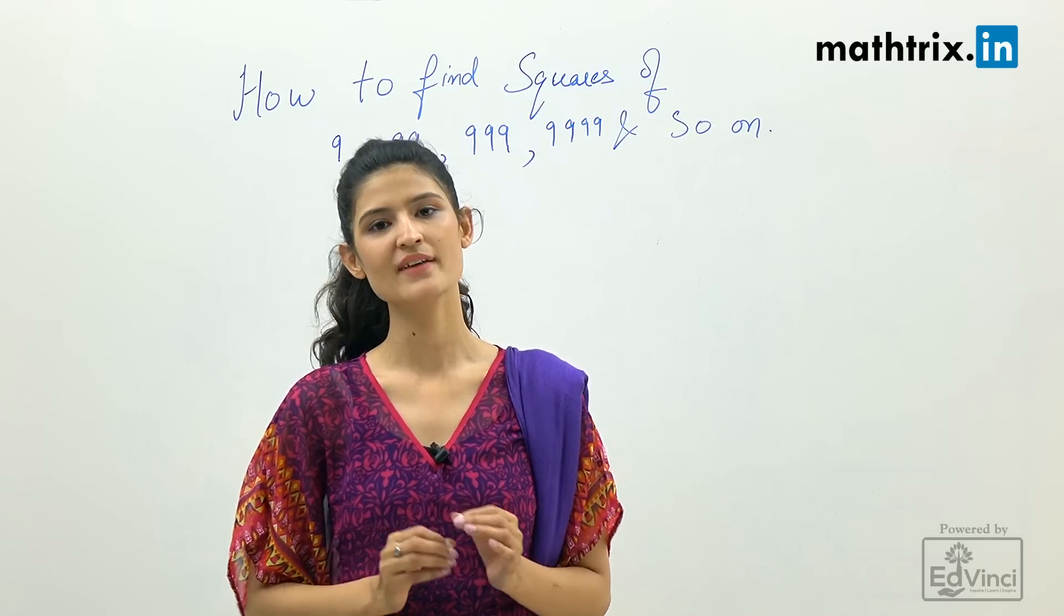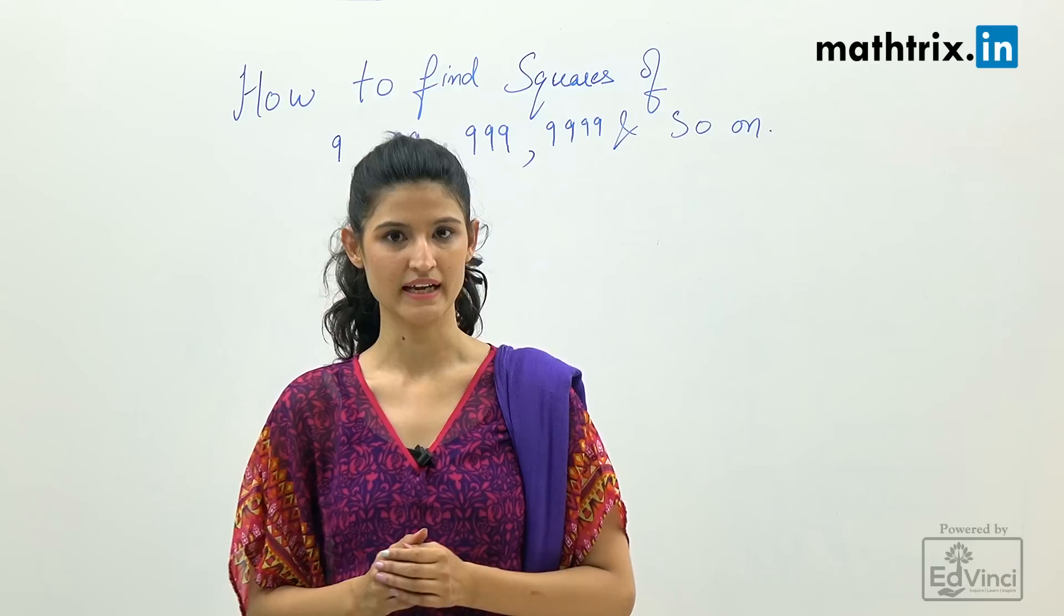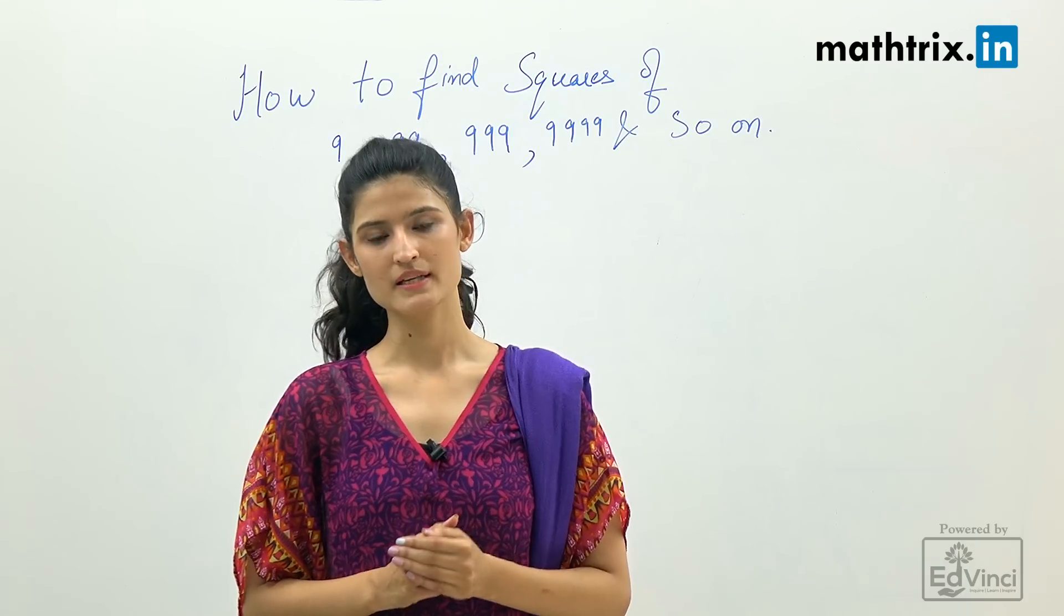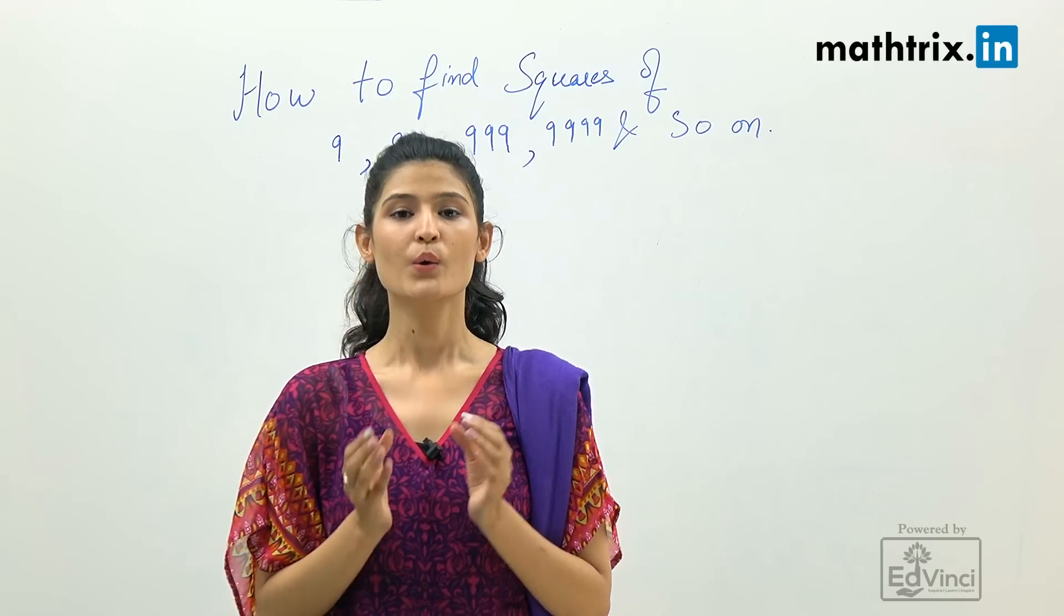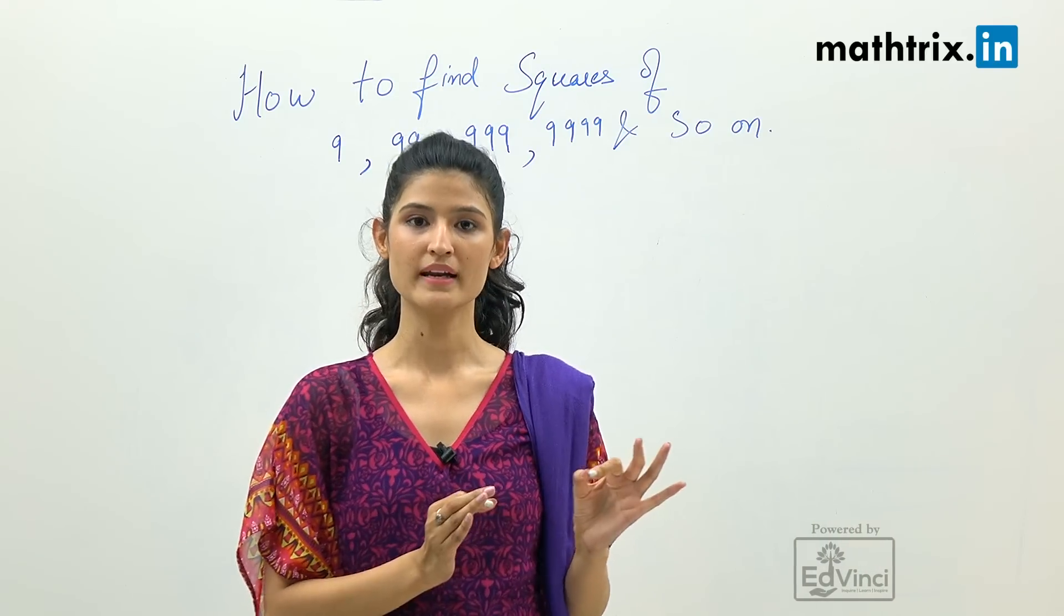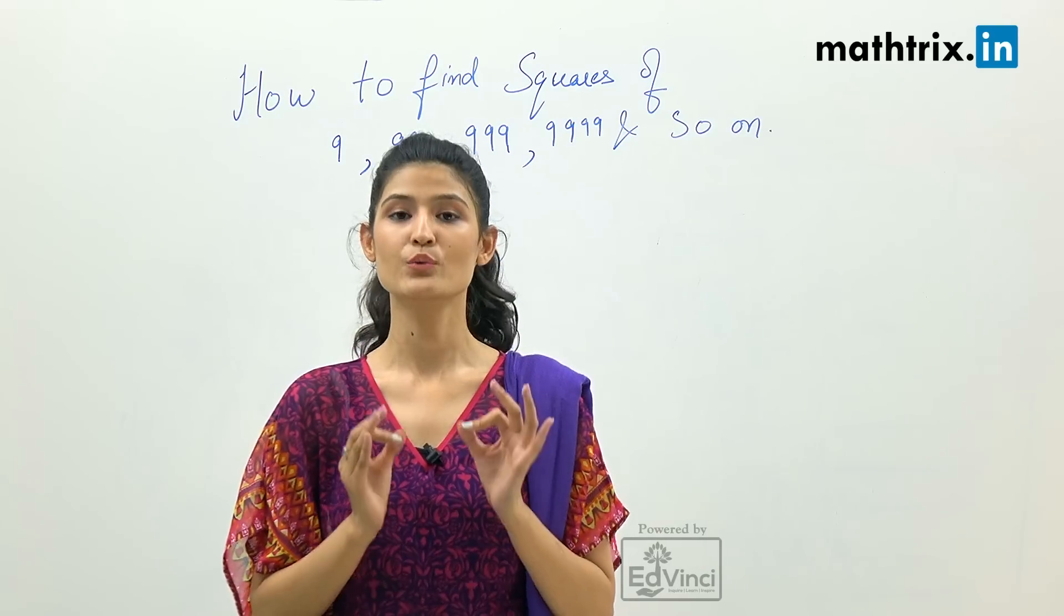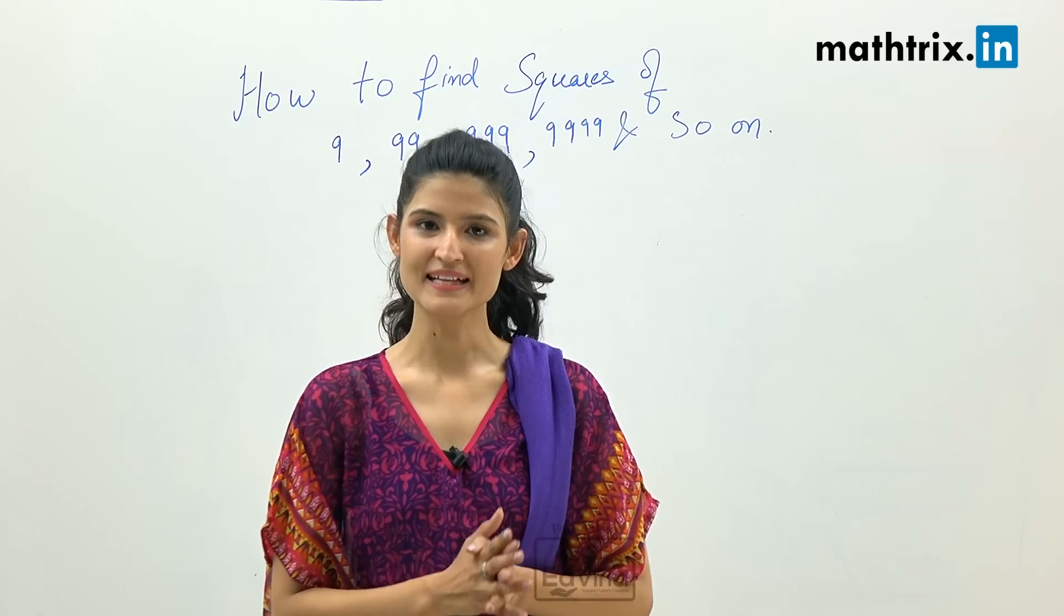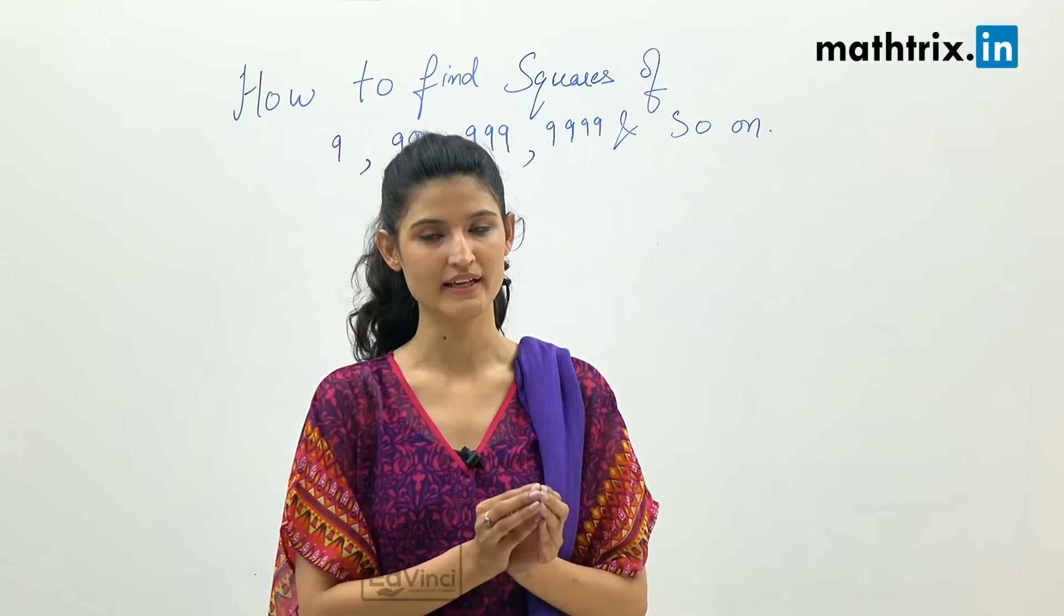Before moving forward, I would like to tell you some basic rules which we have to keep in mind while calculating squares of numbers involving 9. As we all know, 9 square equals 81. Rule number 1 is these numbers must contain 8 and 1. Rule number 2 is the number of 9s and 0s will be 1 less than the count of 9s which we are finding the answer for.